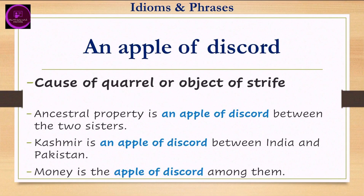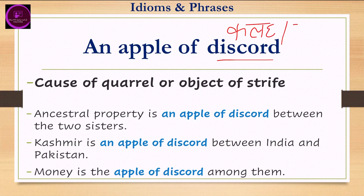Next is 'an apple of discord.' Discord means the root cause of a quarrel — 'jhagde ki jad' or 'kalah.' Apple here means an apple of discord — so 'an apple of discord' means the cause or source of a quarrel or conflict.